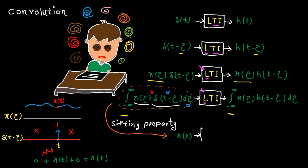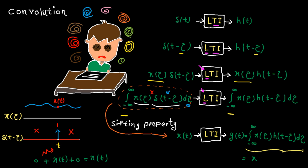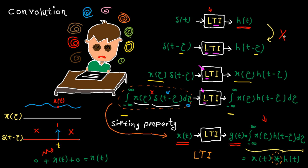Let's go back to convolution. By applying x(t) to the LTI system, the output is this integral, which is commonly referred to as convolution and shown by the star sign. Think about it — what does this mean? When the impulse response H(T) for an LTI system is given, you can basically find the output to any input by finding this integral. That's the beauty of convolution. Please note the system must be LTI — that's the key. If it's not time-invariant, the time shift step is not true. If it's not linear, these steps are not valid. So the system must be LTI.